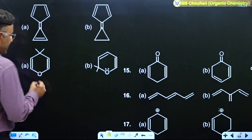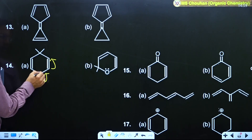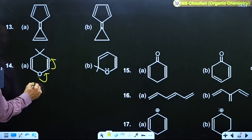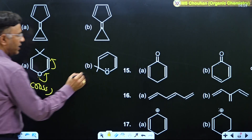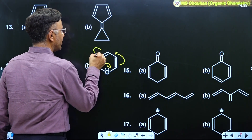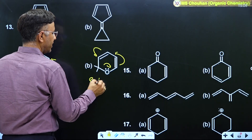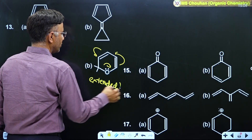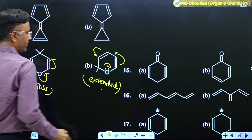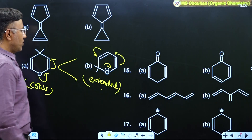In example 14, this lone pair is in conjugation with the pi bond on both the left and right sides. This means it is a cross conjugation. In the second structure of example 14, the lone pair is in resonance with a pi bond, and that pi bond is in conjugation with another pi bond — this is extended conjugation, which is more effective than cross.